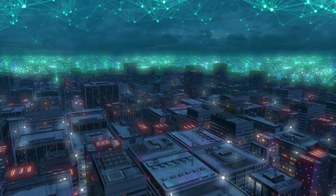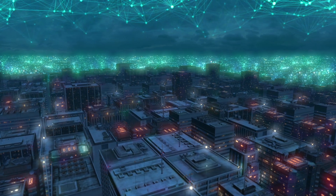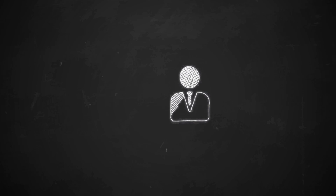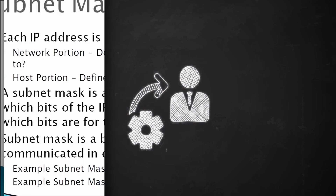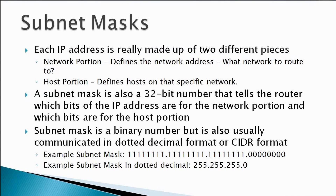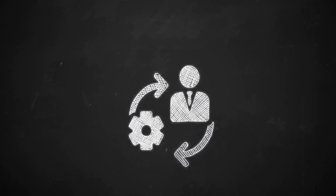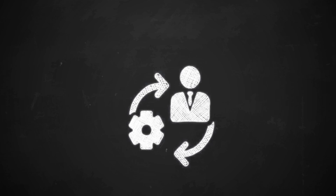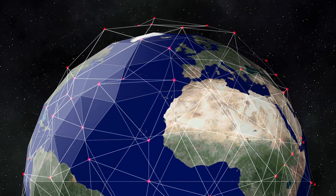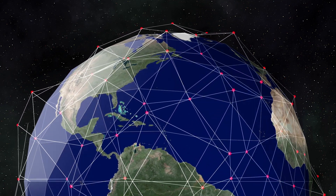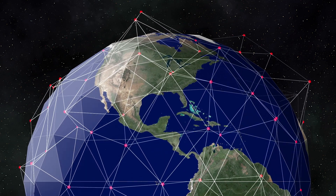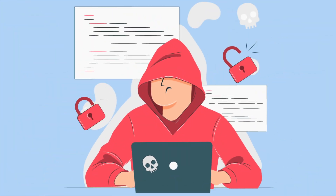Subnetting is all about breaking down an IP address further to specify networks and hosts. Part of the IP address is reserved for the network ID and the rest for the host ID. This is done using a subnet mask like 255.255.255.0, which tells the network which portion of the address is for identifying the network and which part is for individual devices. This split helps secure each subnet — each department or team can have its own subnet, limiting access between them. In cybersecurity, this can prevent attacks from spreading across the entire network if one section is compromised.